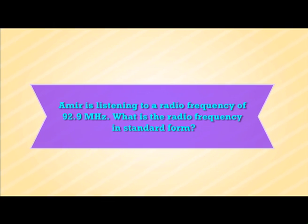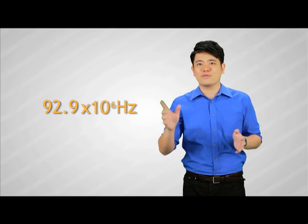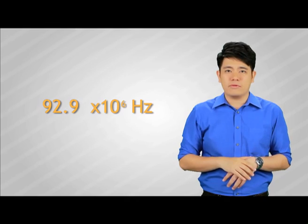Let's take a look at some exam questions. Amir is listening to a radio frequency of 92.9 MHz. What is the radio frequency in standard form? M is mega, and mega is times 10 to the power of 6. So just substitute times 10 to the power of 6 into mega. Now convert it to standard form — just move one decimal place to the front and add 1 to times 10 to the power of 6 to make it 7. Voila! That's one mark in your hand. Super easy.